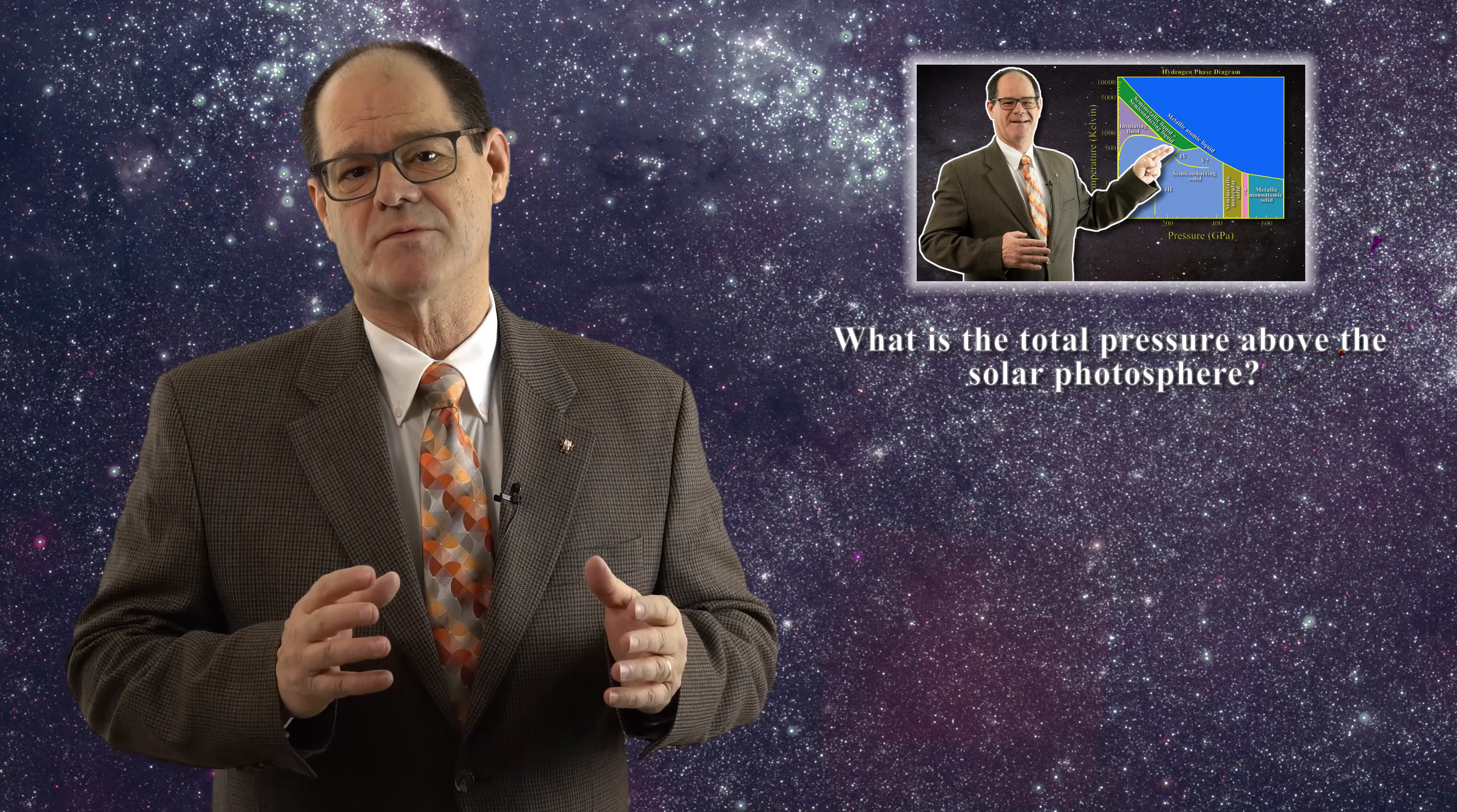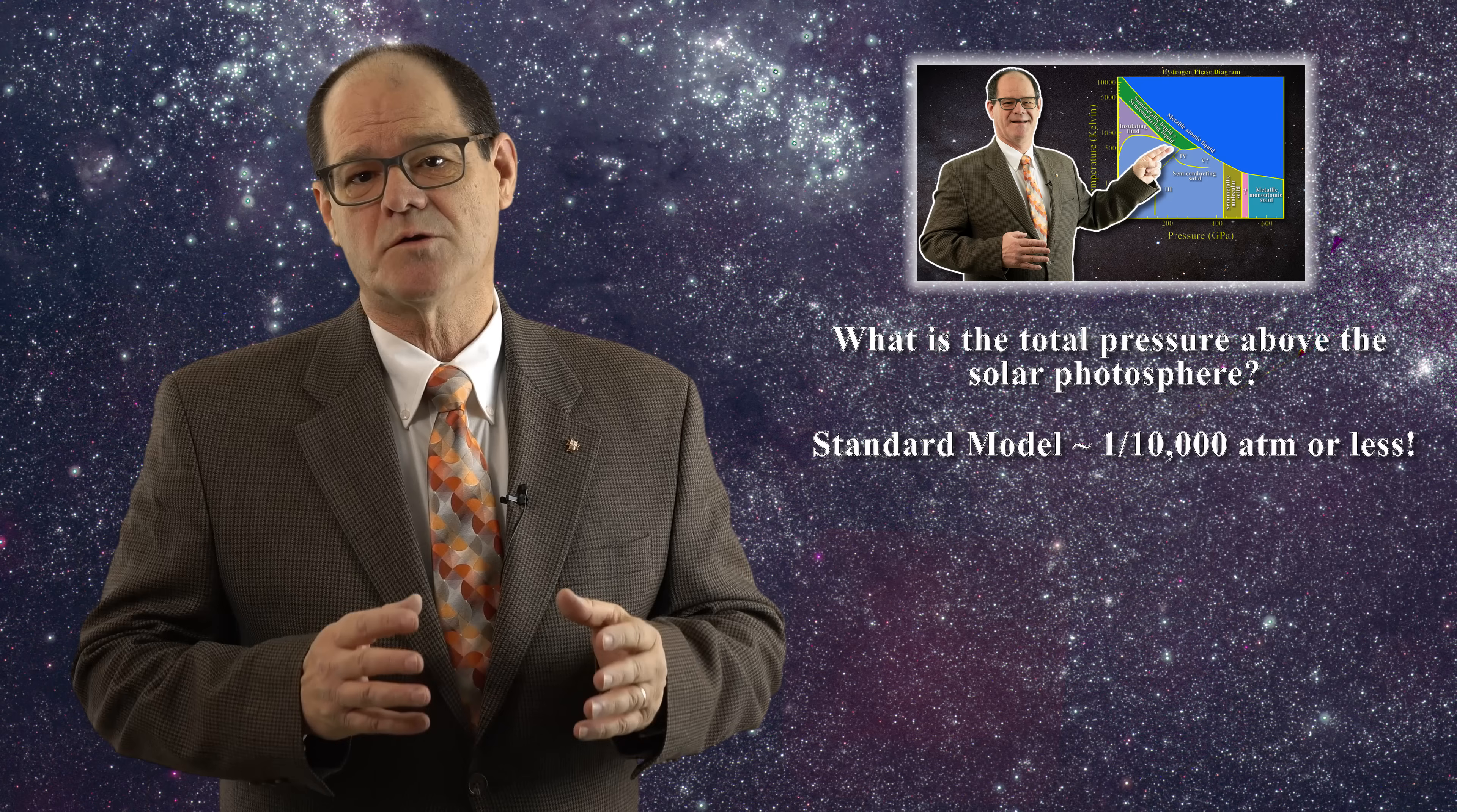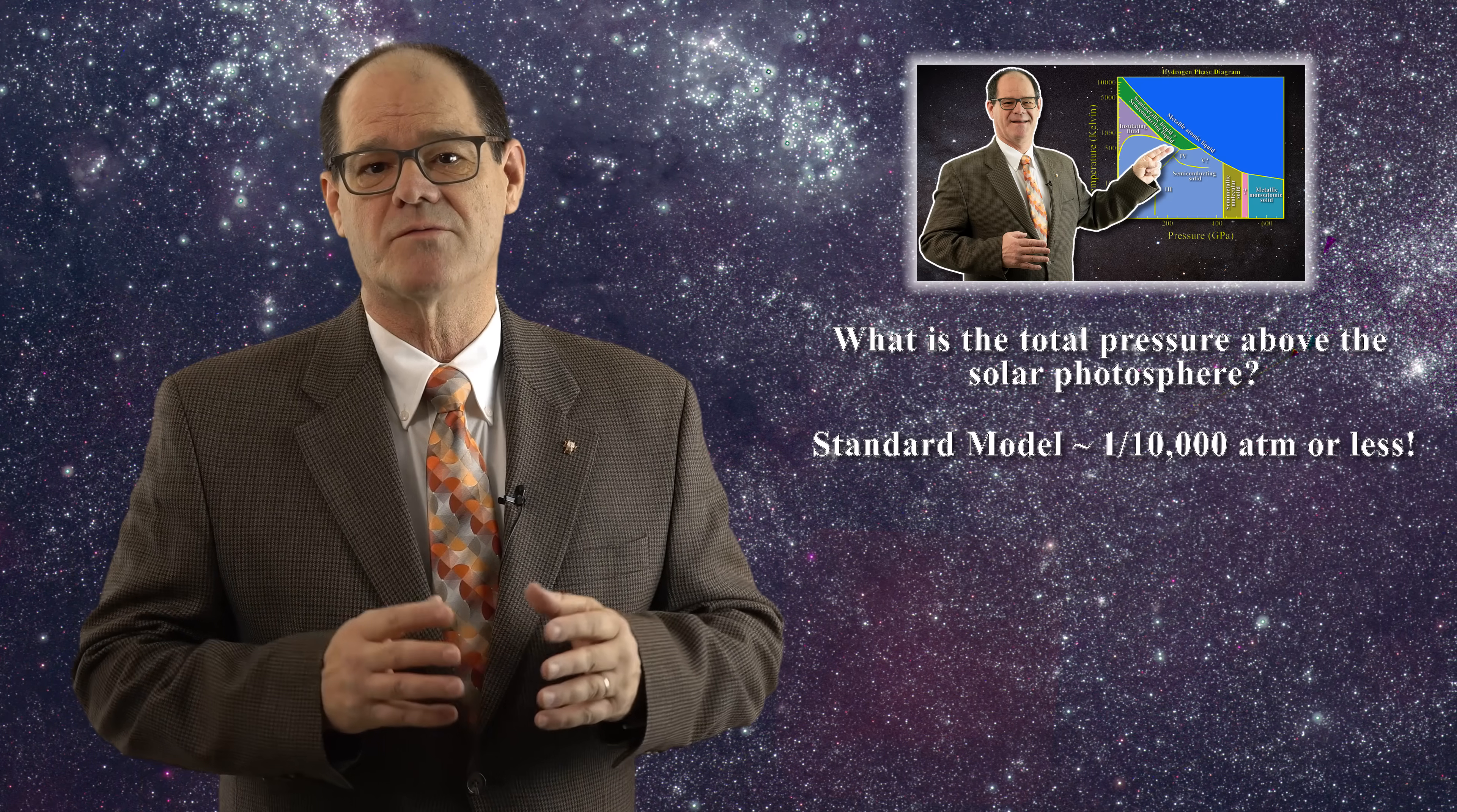Now when considering the hydrogen phase diagram the question naturally arises, what is the total pressure above the solar photosphere? In the standard model that pressure is thought to be a very small fraction of the atmospheric pressure experienced on earth at sea level, namely one ten thousandth of an atmosphere or less. The question is does this make any sense? Are such low solar pressures above the photosphere reasonable?